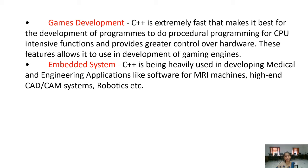Next is games development. C++ is extremely fast, so it is very suitable for writing game programs. In games we need efficient programs and greater control over hardware, which is possible in C++. Next is embedded systems. C++ is used in medical and engineering systems where we need embedded systems. For example, for MRI machines in the medical field, we need software that can be inserted in hardware because they are specialized types of software that must work efficiently. These types of systems can also be developed using C++.